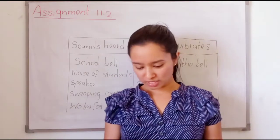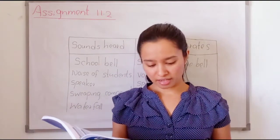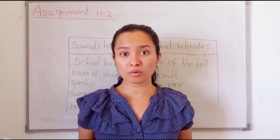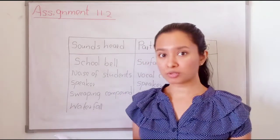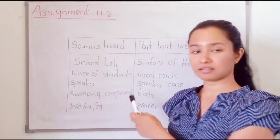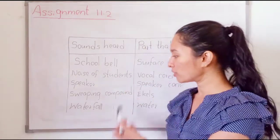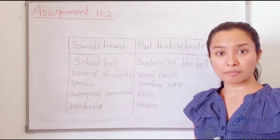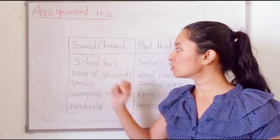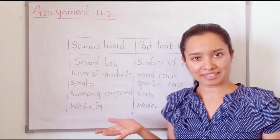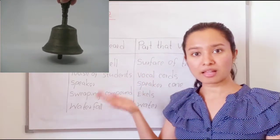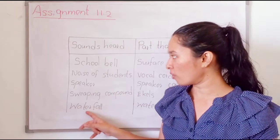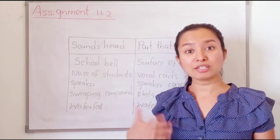Assignment 11.2 — turn to page number four. There is an assignment. Here you have to listen to the sounds you can hear in your environment. It will be natural sounds or artificial sounds. Then you have to list them out in this table — what sounds you can hear in your environment. You also have to mention what is the part that vibrates to produce those sounds. For example, they have written 'school bell.' In a school bell, what is the part that vibrates? That is the surface of the bell — the surface will vibrate to produce sound.